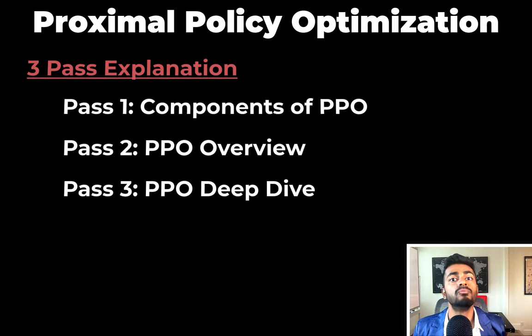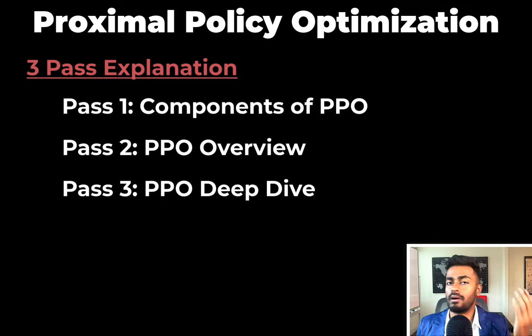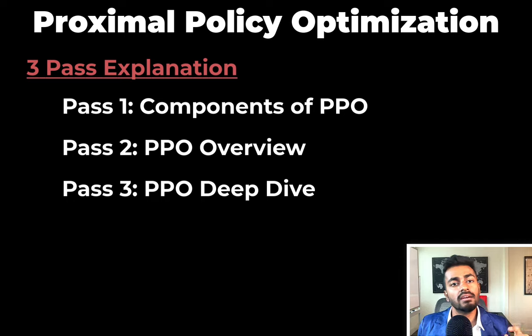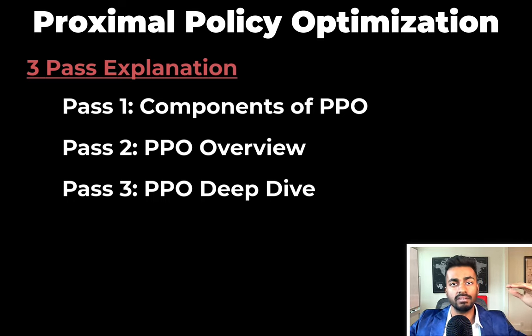In this video we're going to delve into a popular method that an AI uses to modify its decision-making called proximal policy optimization. This video is going to be divided into three passes, where in the first pass we'll start by introducing some concepts and definitions, and as we go into the later passes we'll dive into further details about the algorithm itself. Pay attention because I'm going to quiz you along the way. So let's get to it!